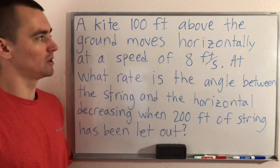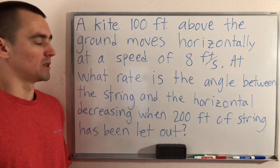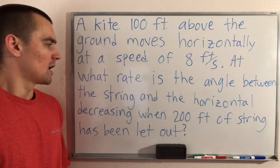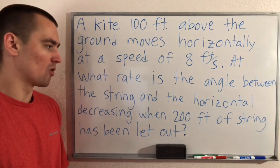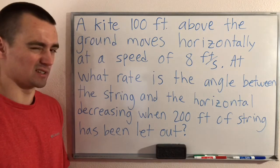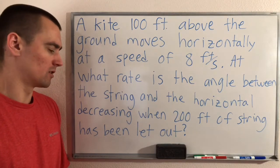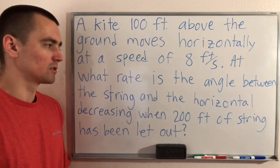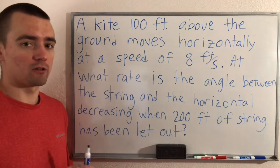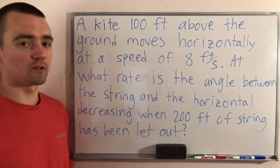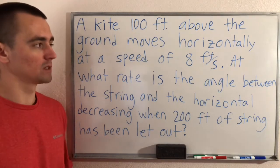We have a kite a hundred feet above the ground, moving horizontally at a speed of eight feet per second. At what rate is the angle between the string and the horizontal decreasing when 200 feet of string has been let out? Like all my other related rates problems, I'm going to follow the same four-step process. The first step is to draw a sketch of what you're dealing with.